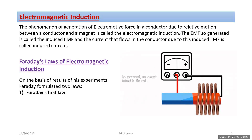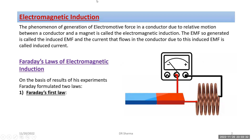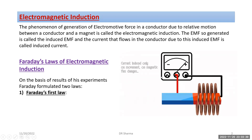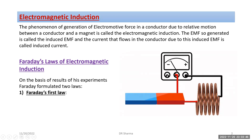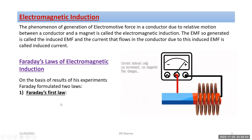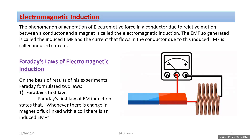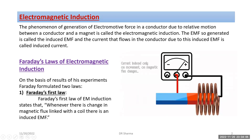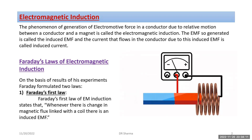When the magnet is moving, you can see the deflection on the galvanometer. As the magnet remains at rest, no EMF is induced and no deflection is seen on the galvanometer. As long as there is a change in magnetic flux linked with the coil, there is an induced EMF. If there is no change in flux, EMF would not be generated.